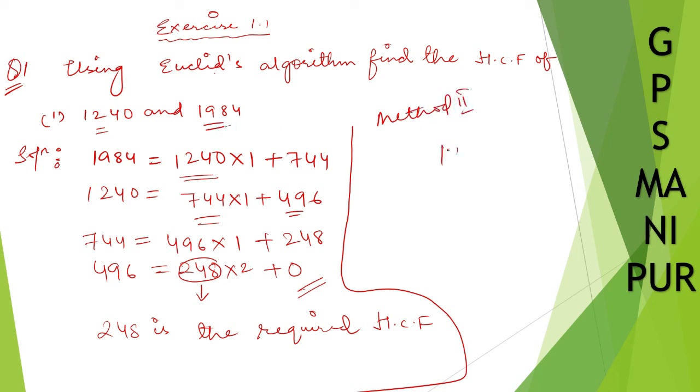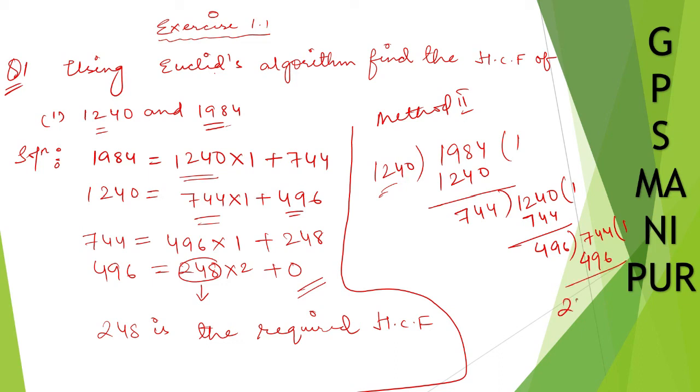So take the bigger number 1984 and divide by smaller number 1240. If you subtract, you'll get 744. You divide to 1240. If you subtract, you'll get 496. Divide to 744. The remainder is 248. You divide to 496, remainder is 0. So 248 is the required HCF.